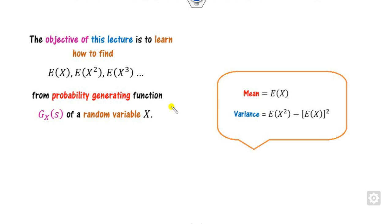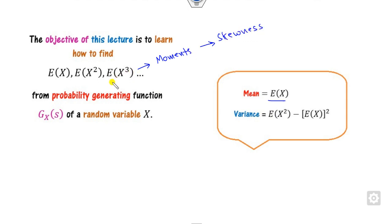The objective of this lecture is to find how you can compute the mean and variances — E[X], E[X²] — these are the moments. If you want to find higher moments like skewness, kurtosis and many more, then you need E[X³], E[X⁴] and so on. We will learn how to calculate these values from the probability generating functions.